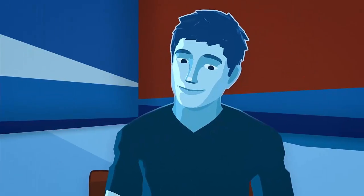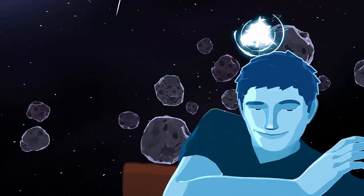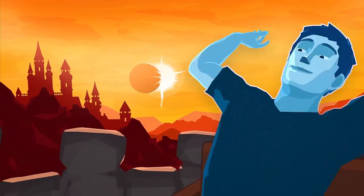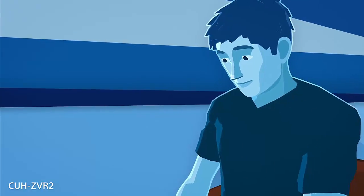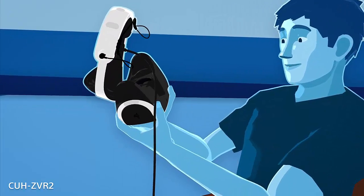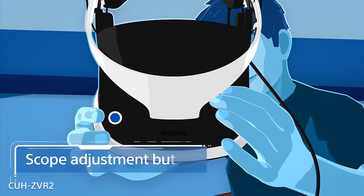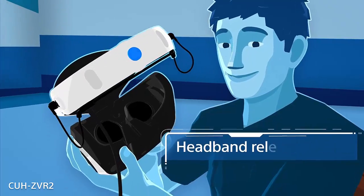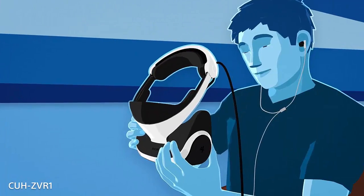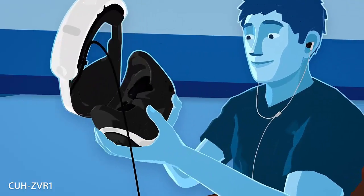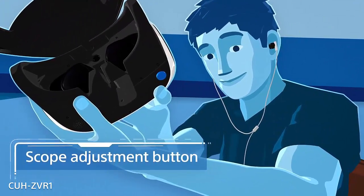You'll likely be doing things like fighting intergalactic wars and defeating ancient evil. So you want your headset to have a snug but comfortable fit. There are two main buttons you'll be using to adjust the size and fit of the headset: the scope adjustment button, located on the scope's top right side, and the headband release button. If you have the CUH ZVR 1, the scope adjustment button is located under the scope on the bottom right side.